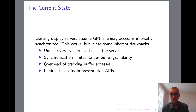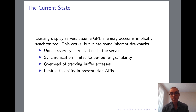Additionally, synchronization can only happen at a per-buffer granularity. Reads and writes to the same buffer will always be serialized, even if they access non-overlapping regions of the buffer. It's impossible to render an image to one part of a buffer and allow that to be read concurrently while you render a different image to another part of the buffer. More generally, tracking all buffer accesses in the kernel can itself impose a potentially significant performance cost.